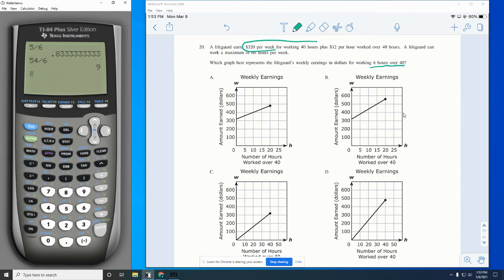So working for 40 hours, they told us at the beginning, they start at $320 at 40 hours. They want to know which of these weekly earnings for over 40. So at 40 hours, you have $320. So that's your starting pay because you've already earned that. And then we're going to increase over 40. So over 40, they get $12 per hour for every hour over 40.